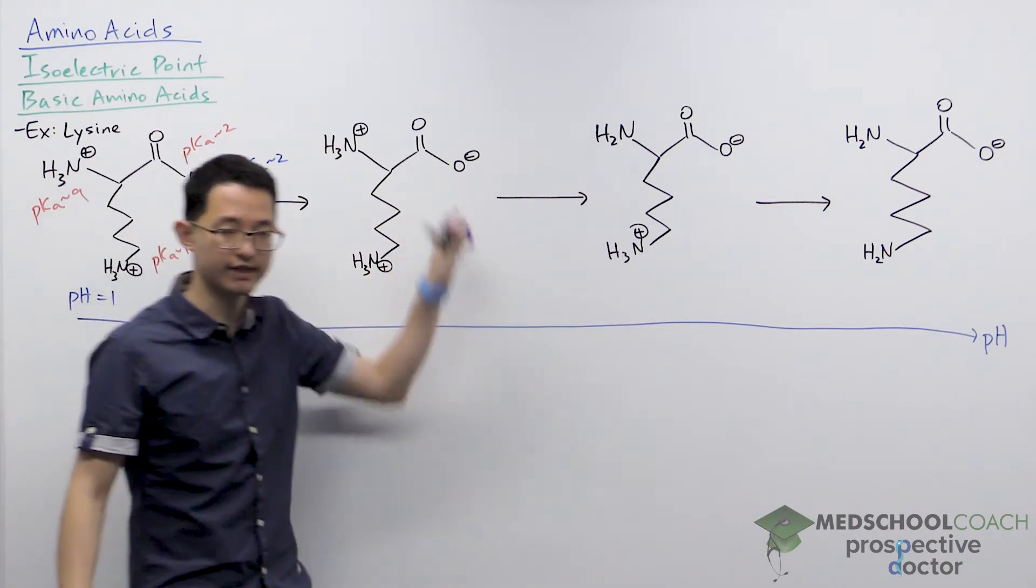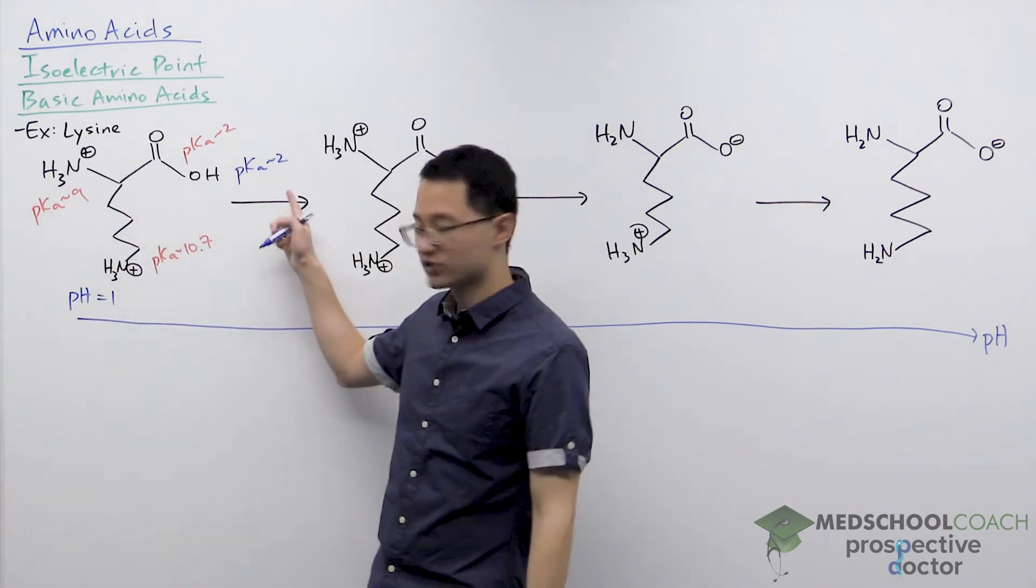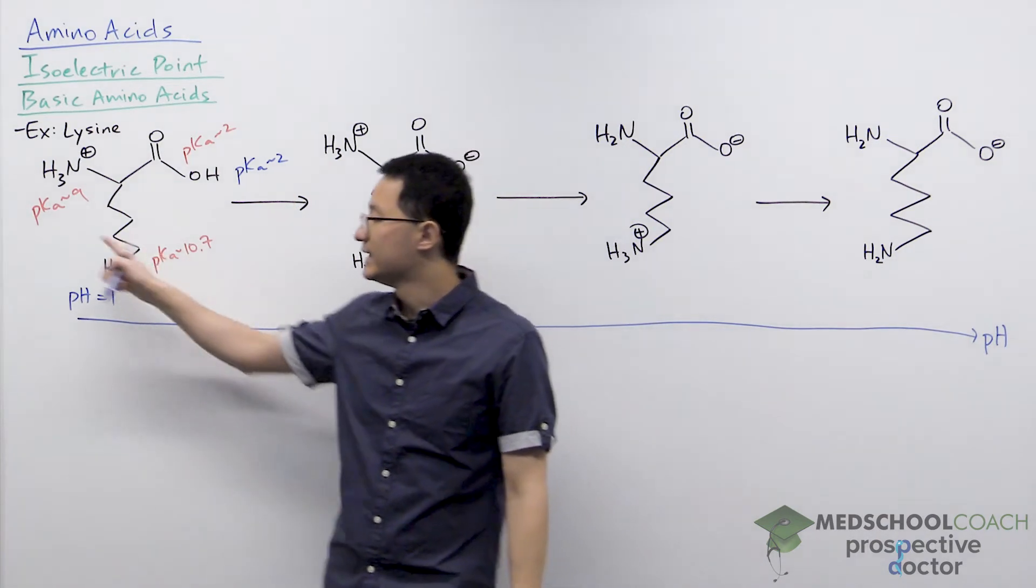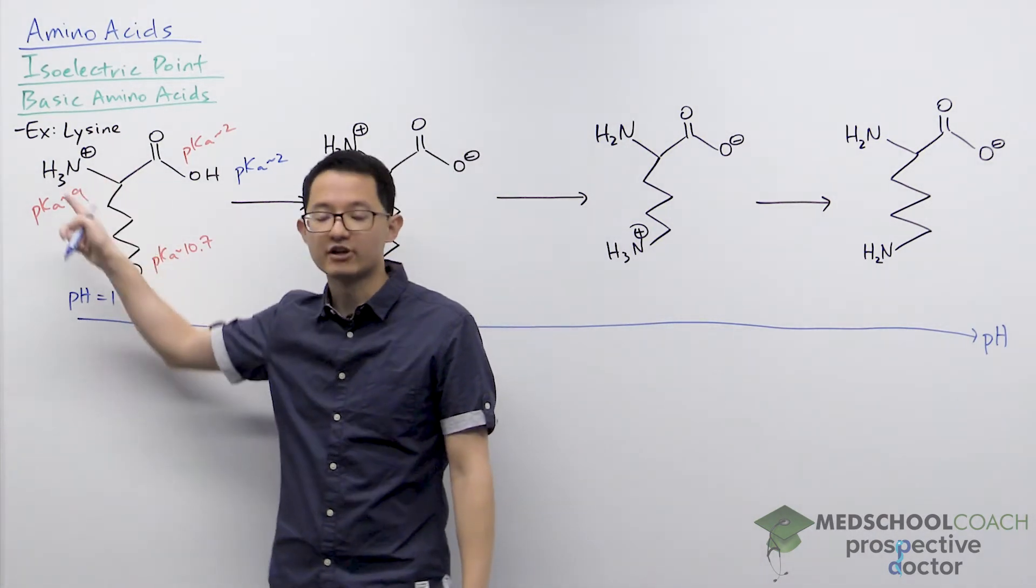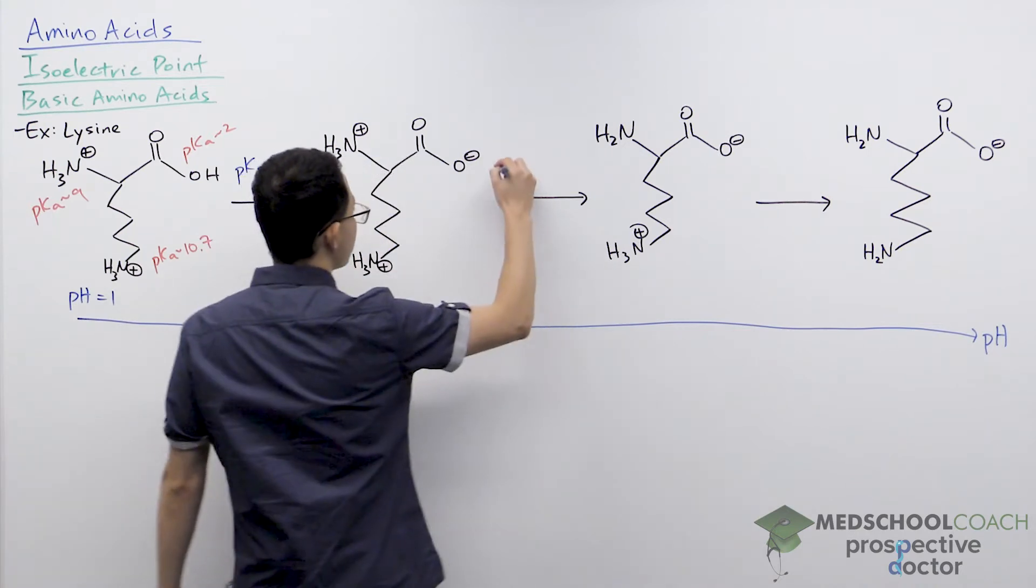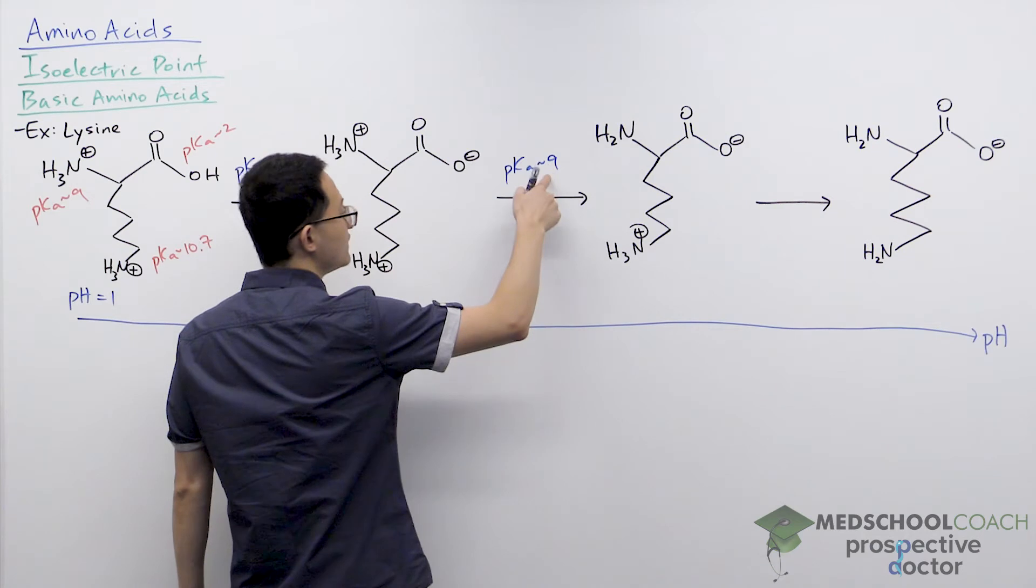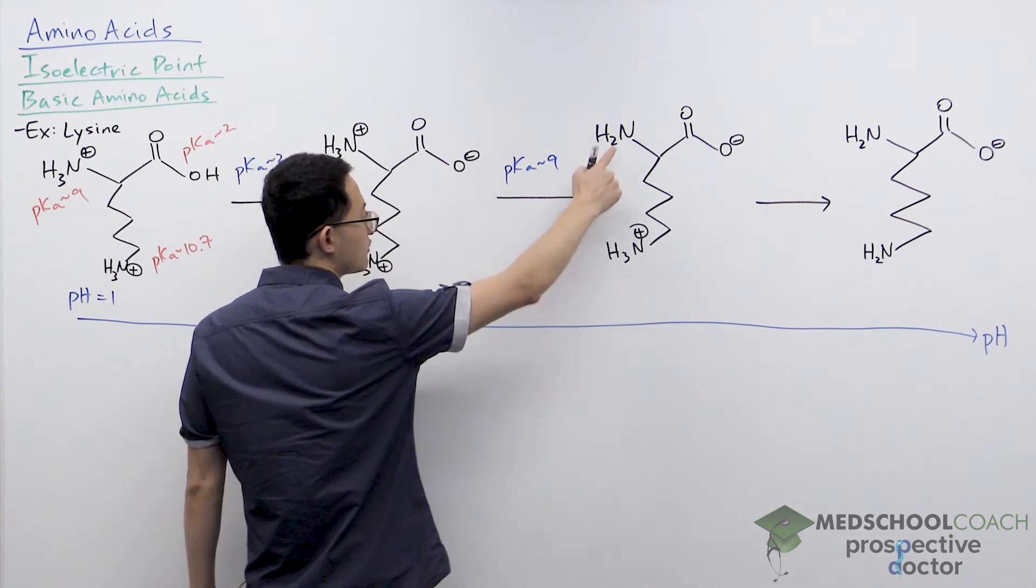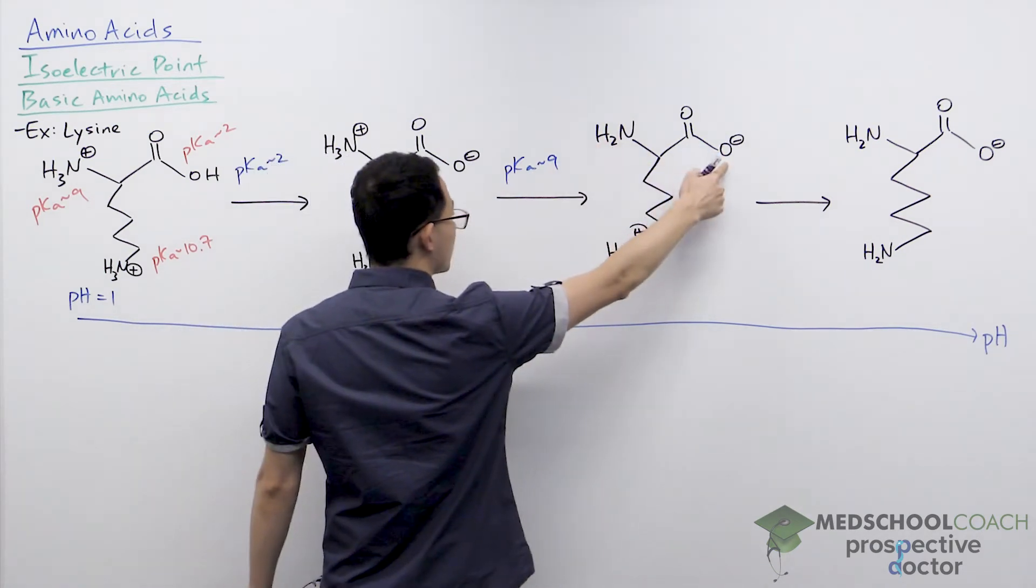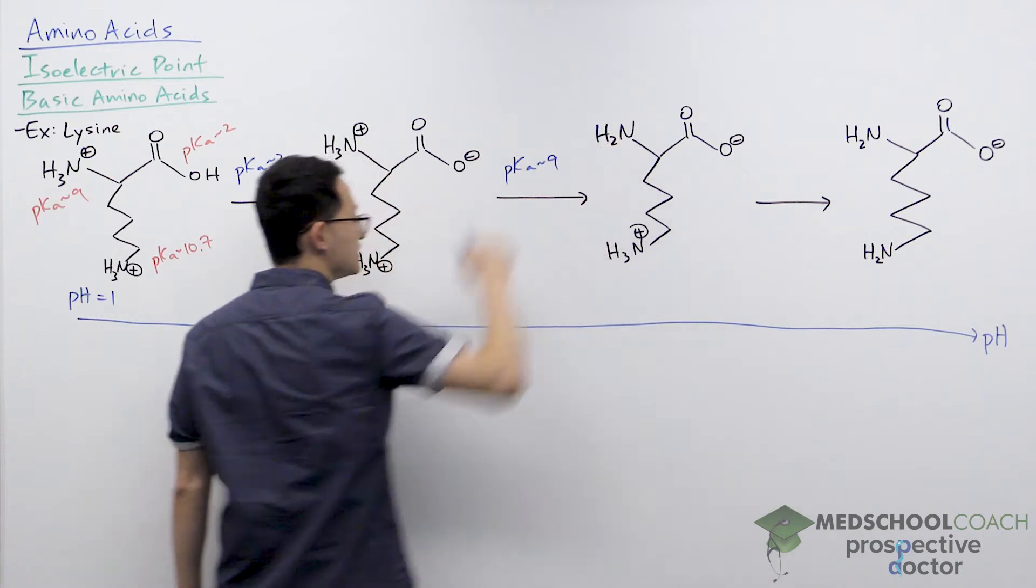As we continue to increase the pH, the next group that's going to become deprotonated is the amino group on the N-terminus of the amino acid, and that's going to happen once we exceed this pKa value of 9. So we'll have this molecule where now both the carboxyl group and this amino group are deprotonated.